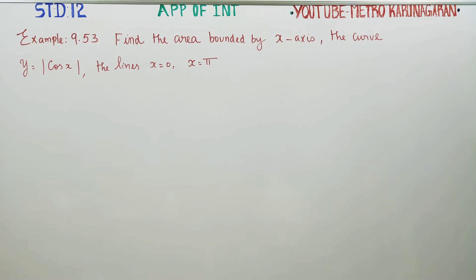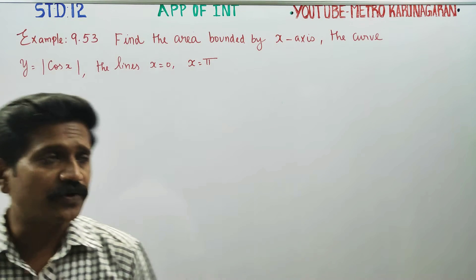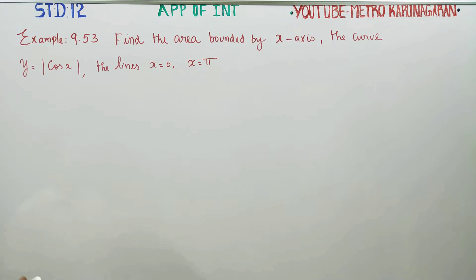Dear Toll Standard students, in example number 9.53, find the area bounded by the x-axis, the curve y is equal to absolute value of cos x (modulus of cos x), where x is equal to 0 to pi.